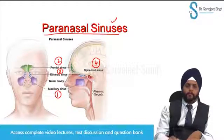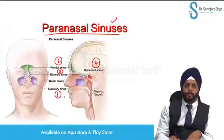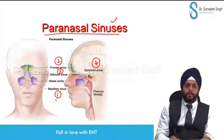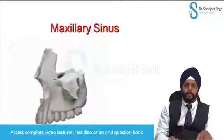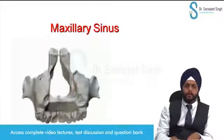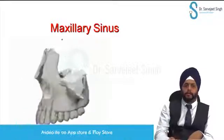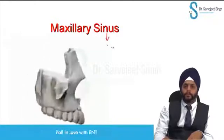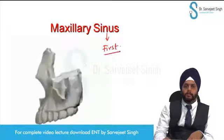We have four pairs of paranasal sinuses: maxillary, ethmoid, frontal, and sphenoid. Let us talk about each one of them. Starting with the maxillary sinus — this maxillary sinus is in the maxillary bone. We have a pair of maxillary bones, one on each side. This is the sinus which is first to develop, embryologically.